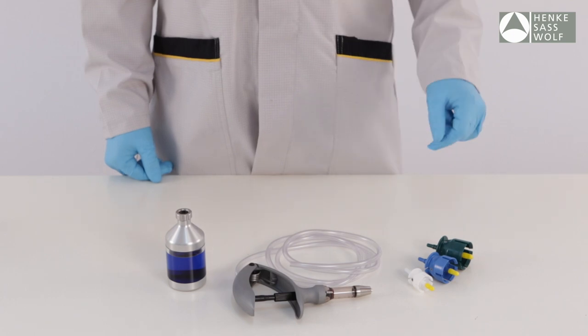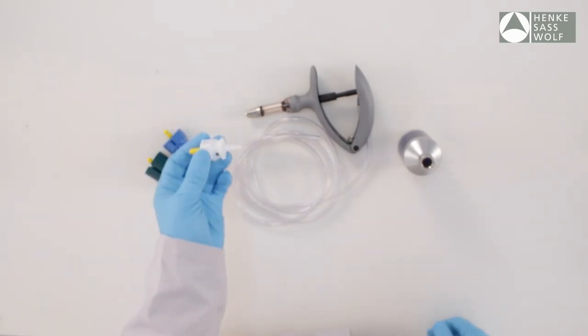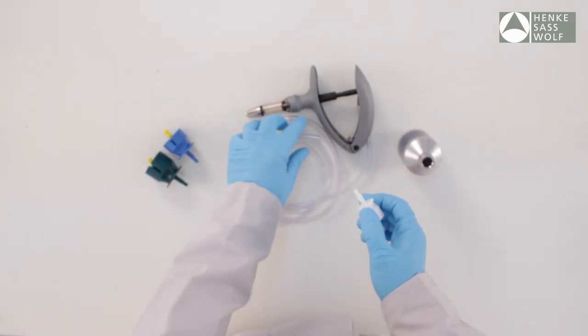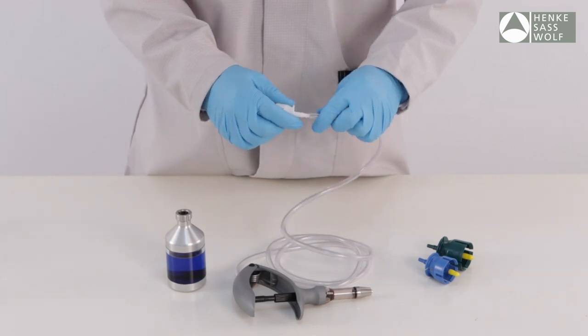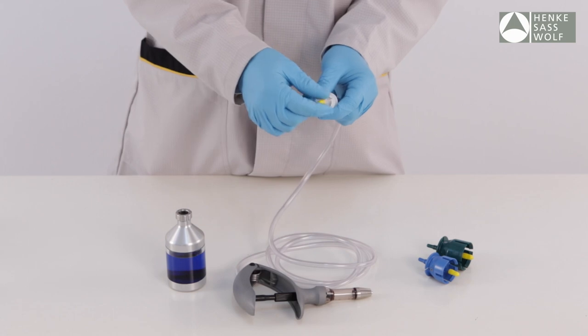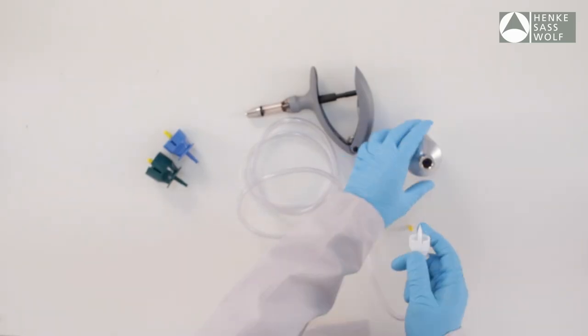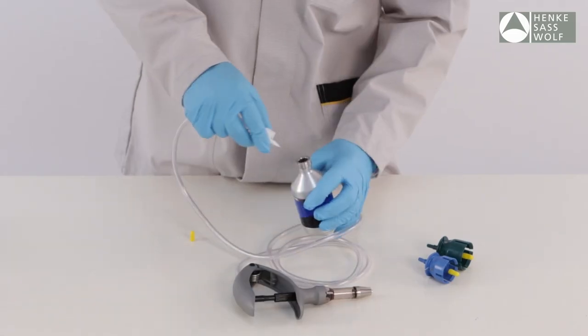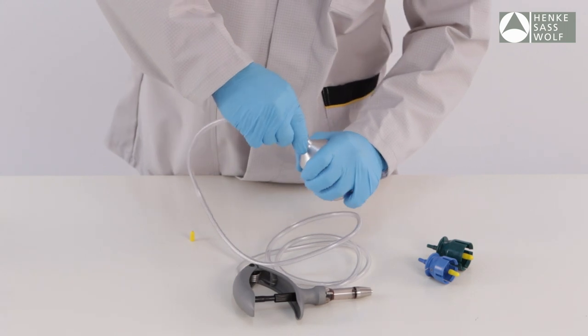Henke SAS Wolf syringes with tube attachment. Select the corresponding draw-off cap for your bottle you want to use. Attach the end of the tube to the draw-off cap. Take off the security cap and stick the spike of the draw-off cap into the center of the rubber cap of the bottle.